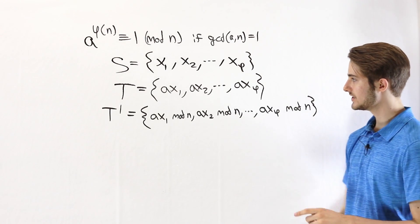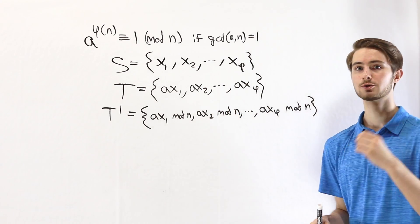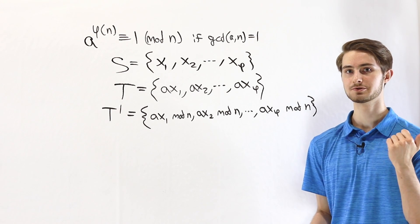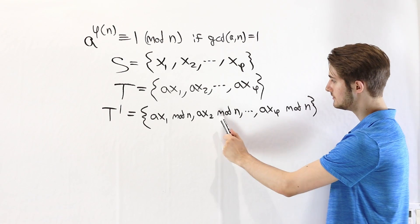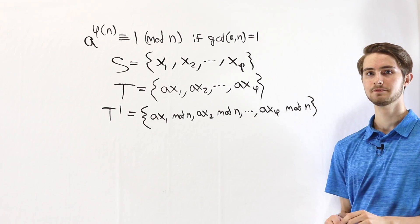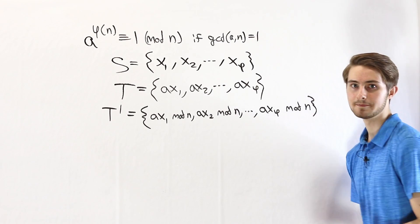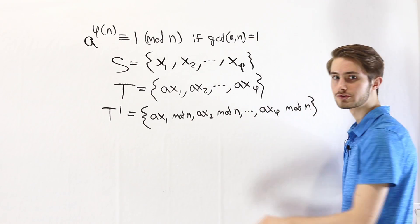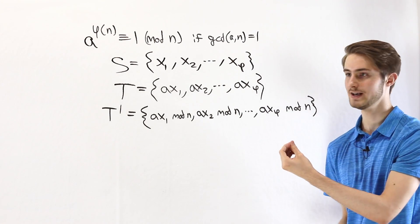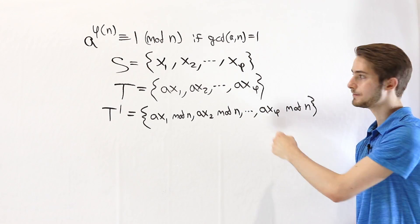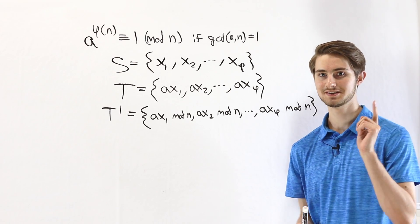Now we're going to construct another set which we'll call T'. We get T' by taking all of the elements of T and reducing them mod n. So we're looking at ax₁ mod n, ax₂ mod n, and so on up to ax_φ mod n. Another important property of coprime numbers says that if a number is coprime to n, then when we reduce it mod n, the result is still coprime to n. So all of these reduced numbers are still coprime to n.